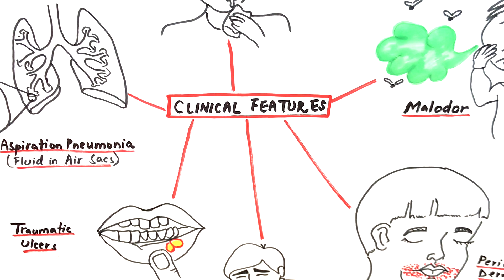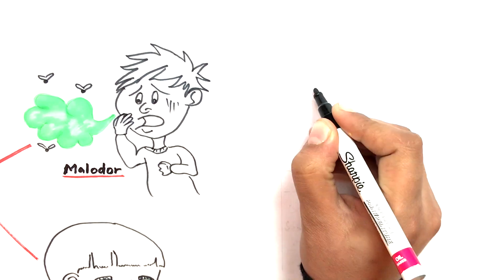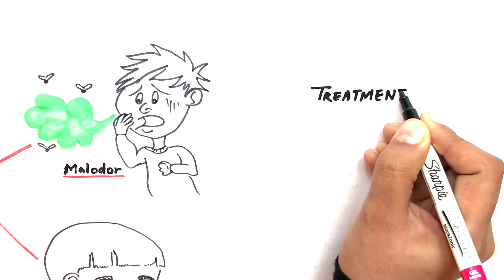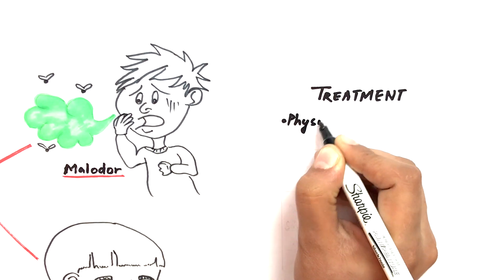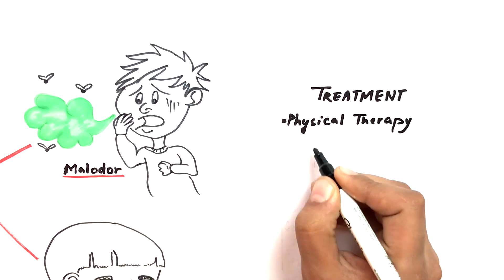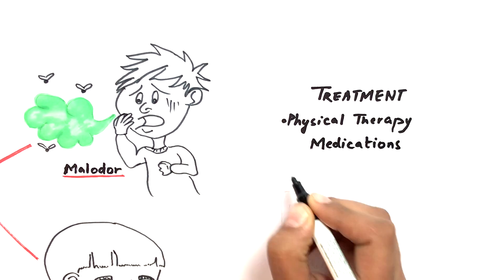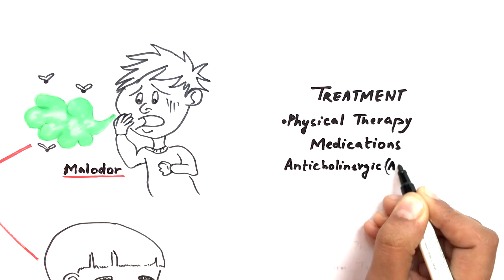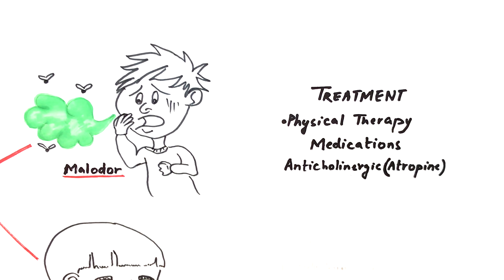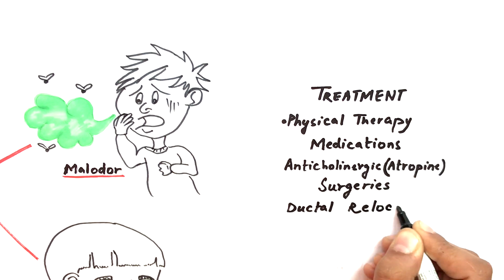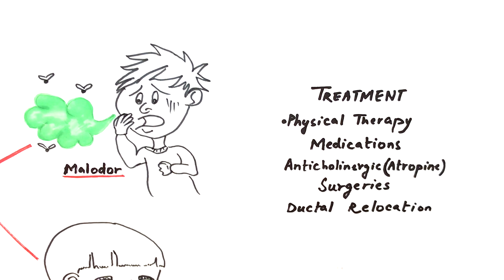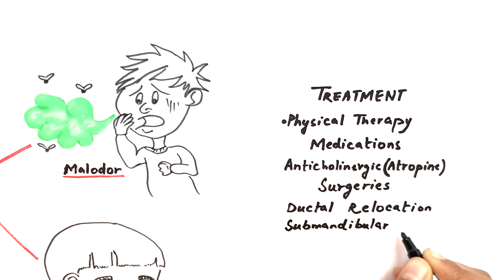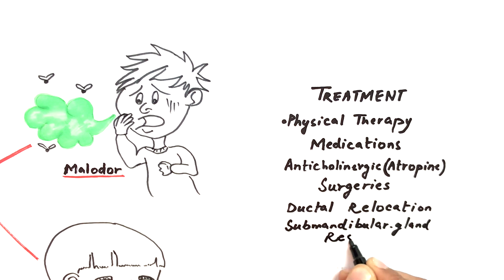Depending on etiology, there are several categories of treatment for sialorrhea. If the problem is in neuromuscular control, physical therapy can prove to be helpful. Medications are also helpful — the most often used are anticholinergics like atropine. In severe cases, surgeries could also be performed, such as ductal relocation surgery where the submandibular duct is relocated posteriorly, or resection of part of the submandibular gland.